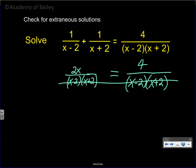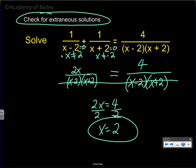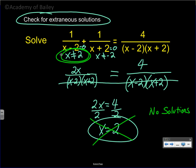The right side equals 4 over (x − 2)(x + 2). They have the same denominator, so we cross them out and we're left with 2x equals 4. Solving for x: x equals 2. Now check for extraneous solutions: x cannot equal 2 (from x − 2 = 0) and x cannot equal negative 2 (from x + 2 = 0). But our answer has x = 2 in it — and x cannot equal 2. So this is not a solution. Therefore there are no solutions to this equation.